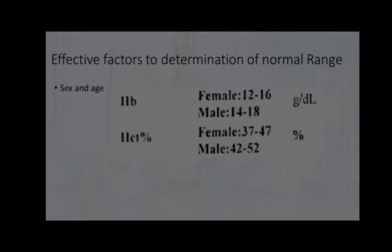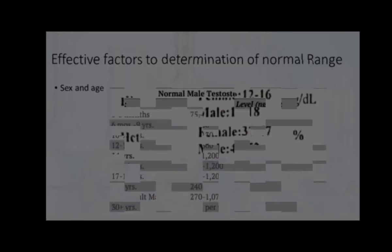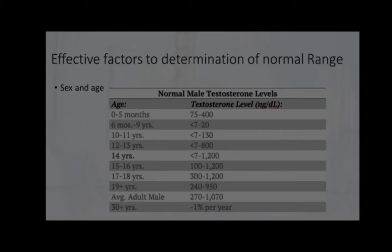There are some factors that should be considered for determination of normal range, such as sex and age. For example, hemoglobin and hematocrit in men and women are different. Testosterone related to age and sex is different.